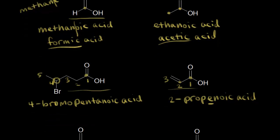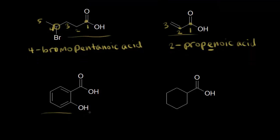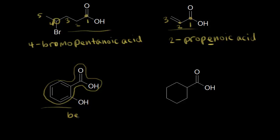Let's look at this molecule on the bottom left. There's a benzene ring attached to a carboxylic acid, and we've seen this before — we call it benzoic acid. Naming it as benzoic acid gives the carbon attached to the carboxylic acid the number one position. We want to give our substituent the lowest number possible, so the OH group is on carbon two, making this 2-hydroxybenzoic acid. Benzoic acid is actually a common name, but it's used so frequently it's been incorporated into IUPAC nomenclature.